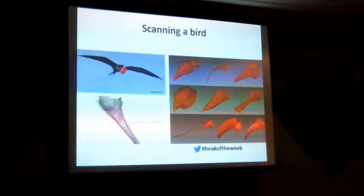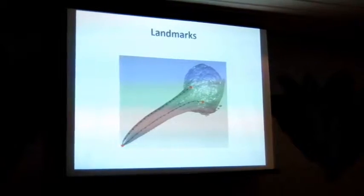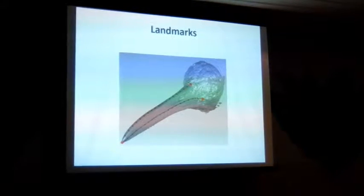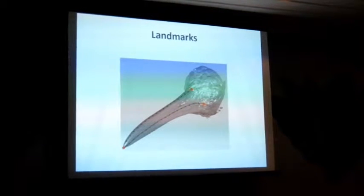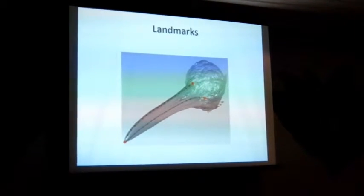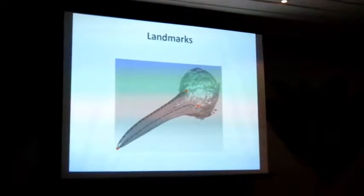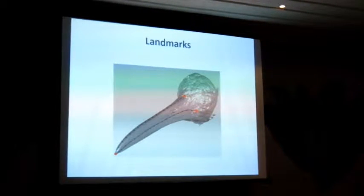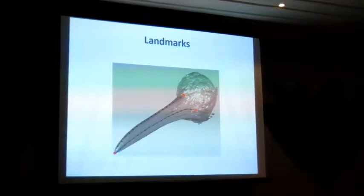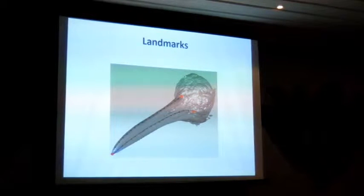To turn these 3D scans into morphometric data, we place a series of landmarks on the surface of the bill — in our case just on the upper mandible. This consists of four fixed landmarks placed at homologous points on the surface of the bill, and then 54 sliding semi-landmarks which describe the dorsal ridge and the two sides of the bill.